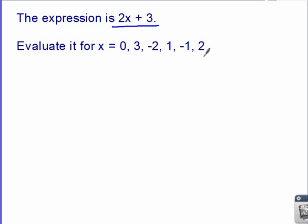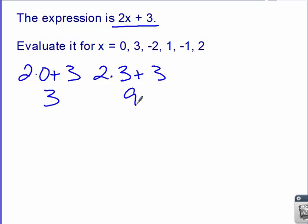I would take the 0, plug it in. 2 times 0 plus 3, and then do the math. 2 times 0 is 0, plus 3 is 3. Then I'd go to the next one. 2 times 3 plus 3. 2 times 3 is 6, plus 3 gives you 9. Got the next one. 2 times, now it's negative 2, and then plus 3. 2 times negative 2 is negative 4. Negative 4 plus positive 3 gives me negative 1. And we could do all the rest of them the same way.